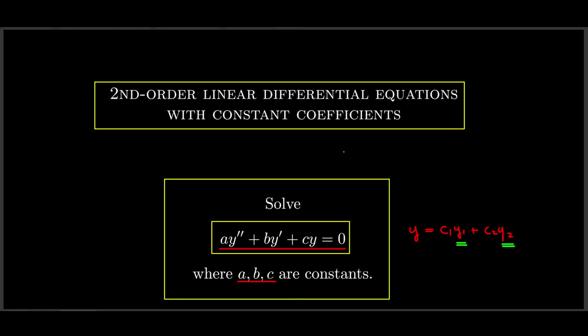So in order to solve this equation we just need to find two linearly independent solutions y1 and y2. That's all we need to do, and then we can solve the whole equation by forming this general linear combination.